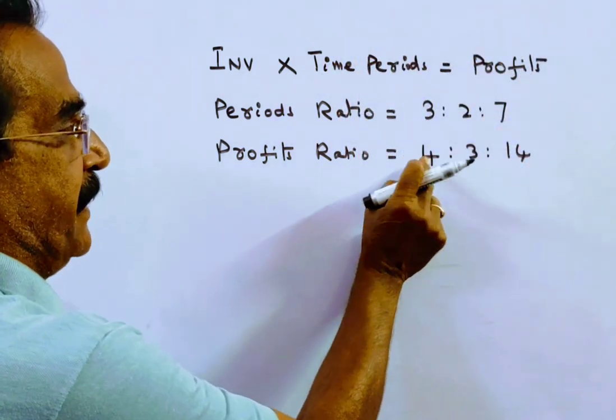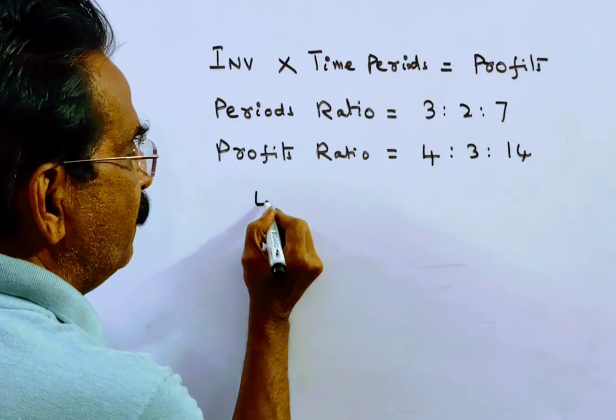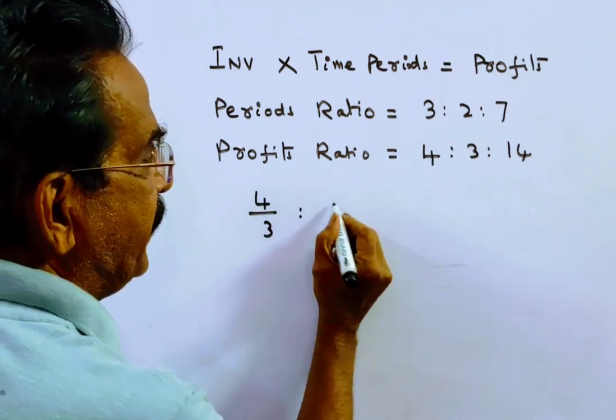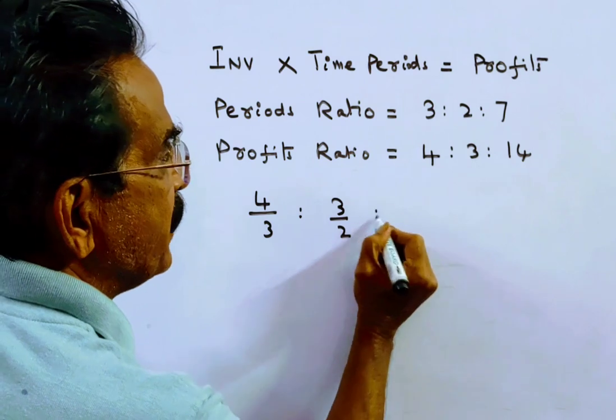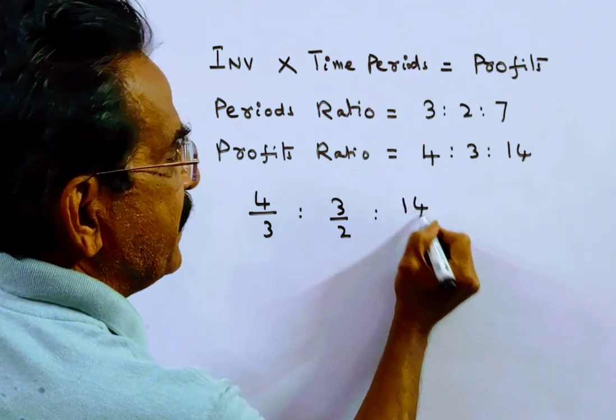So profits by time periods: 4 by 3, 4 by 3 is to 3 by 2, 3 by 2 is to 14 by 7.